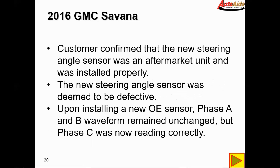The customer confirmed the new steering angle sensor was an aftermarket unit and was installed properly. Apparently there's a locking tab in this steering angle sensor that you cannot remove until it's installed correctly — a failsafe to ensure proper installation. After speaking with the customer, we determined the new steering angle sensor was defective. Upon installing a new OE sensor, phase A and B waveform remained unchanged, but the phase C waveform was now reading correctly. In the end, this vehicle required a new OE sensor — the aftermarket sensor was defective.